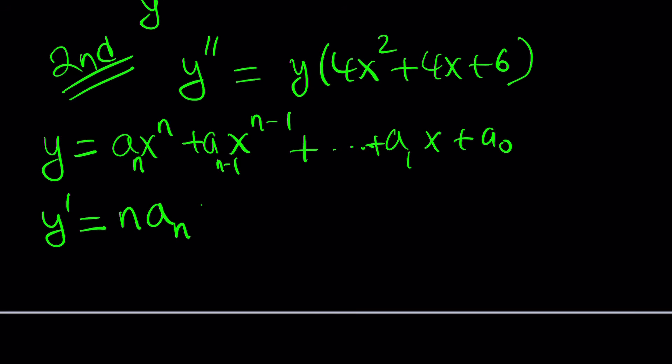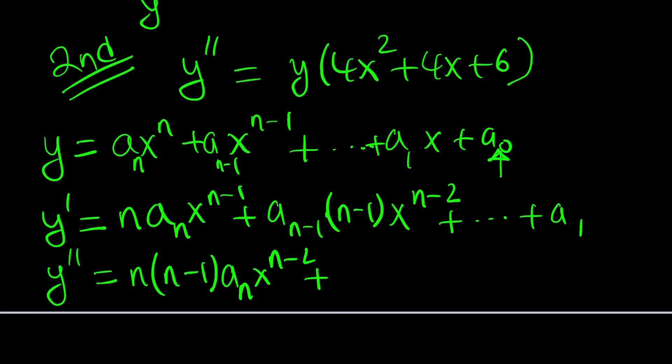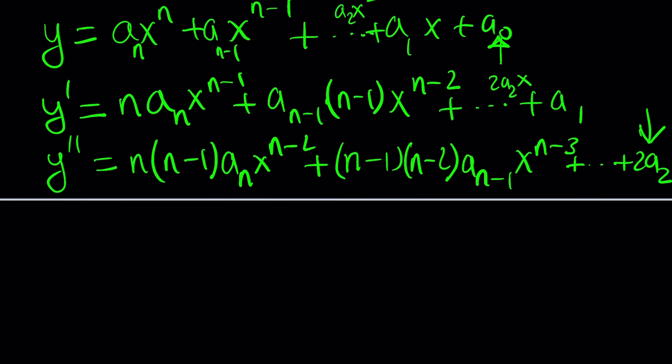Differentiate both sides. That's going to give you n times a sub n x to the power n minus 1 plus a sub n minus 1 times n minus 1 times x to the power n minus 2 dot dot dot. With the first derivative, a sub 0 is a constant, so it's going to disappear and we're going to end up with a sub 1. And when you differentiate this one more time, you're going to get n times n minus 1 a sub n x to the power n minus 2 plus n minus 1 times n minus 2 times a sub n minus 1 x to the power n minus 3 and then dot dot dot at the end.